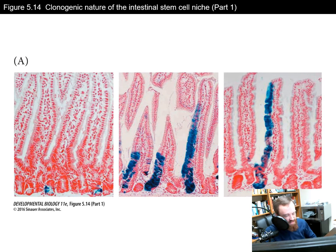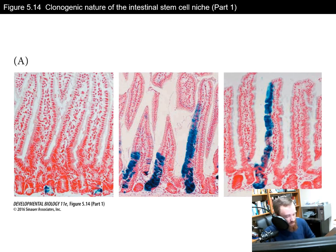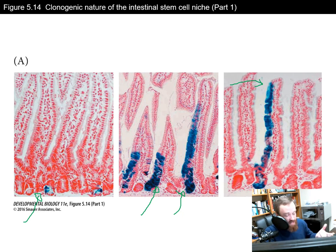Here we can see actual histology staining of these intestinal villi. The cells stained in the crypt get pushed further and further up the edge of the villi through cell divisions until they reach the top. Once they reach the top, anoikis happens and they're squeezed out, no longer part of the epithelium — excreted through natural human defecation.